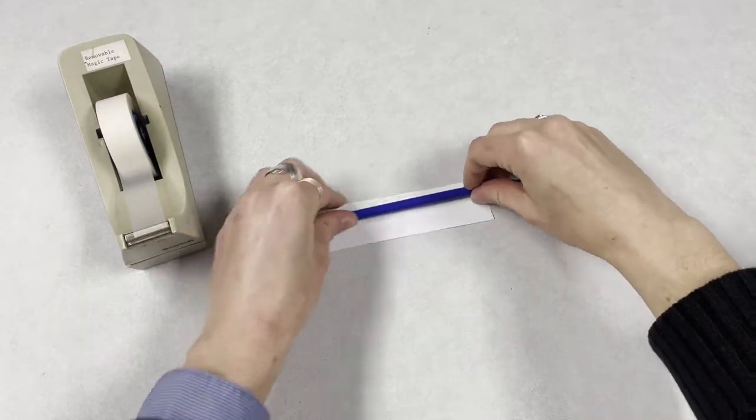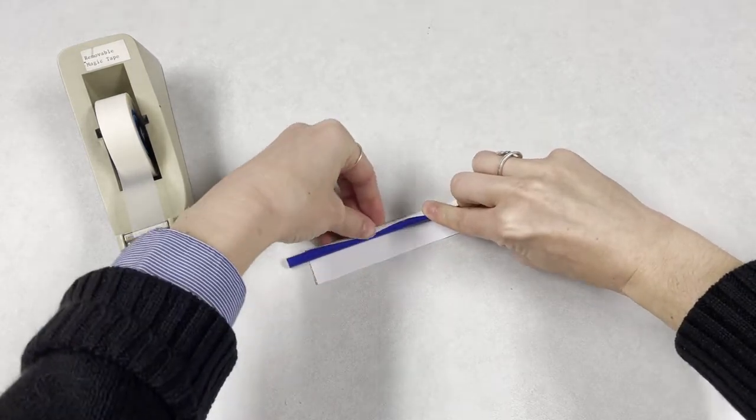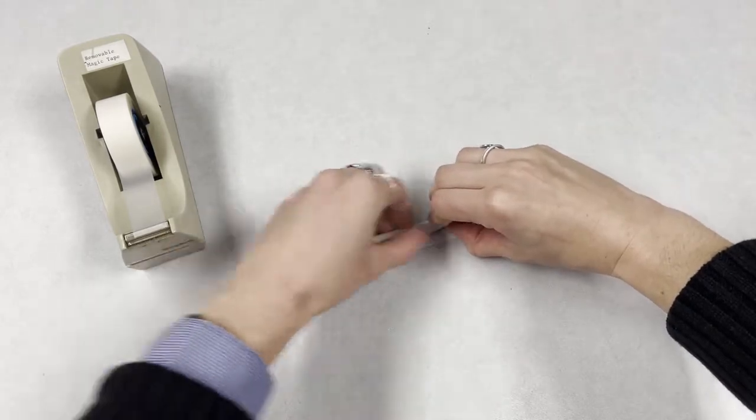The first thing that we want to do is cut out this rectangle. This is going to be the body of our rocket and wrap it around a pencil to create a tube. Take the rectangle and wrap it around a pencil to form a tube. And once you have that shape, go ahead and tape it closed.